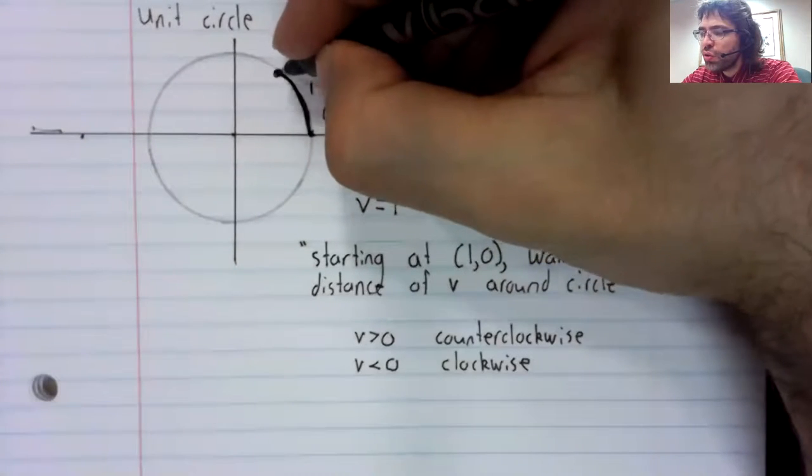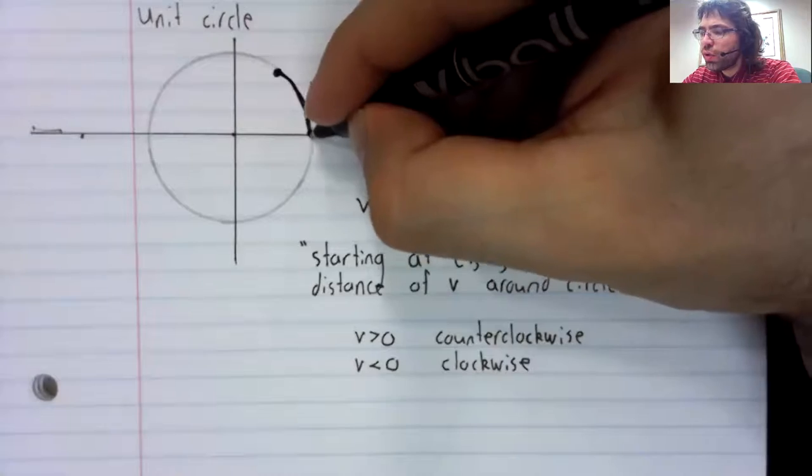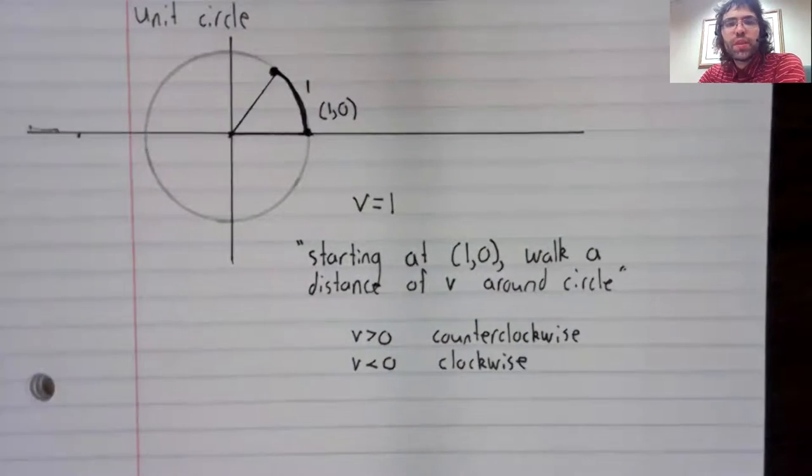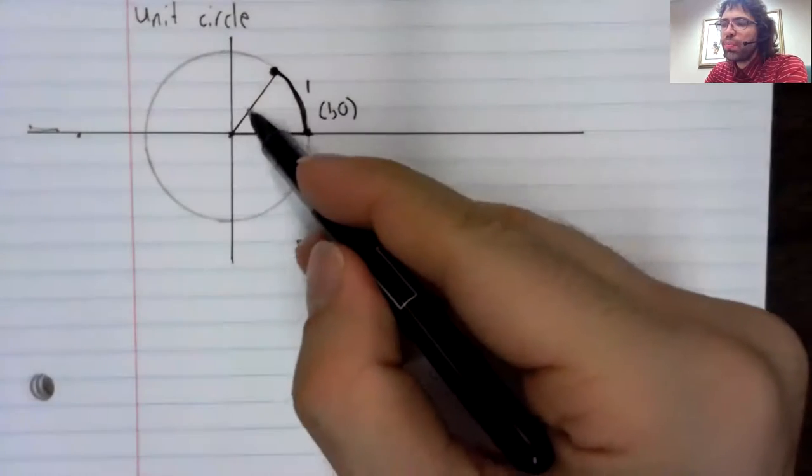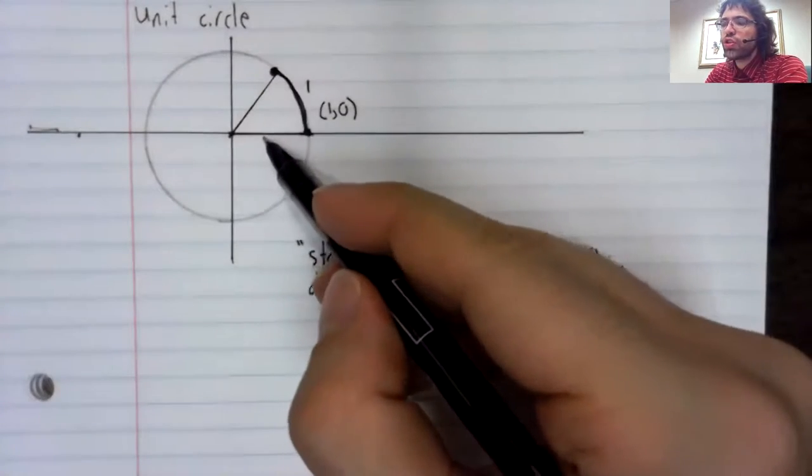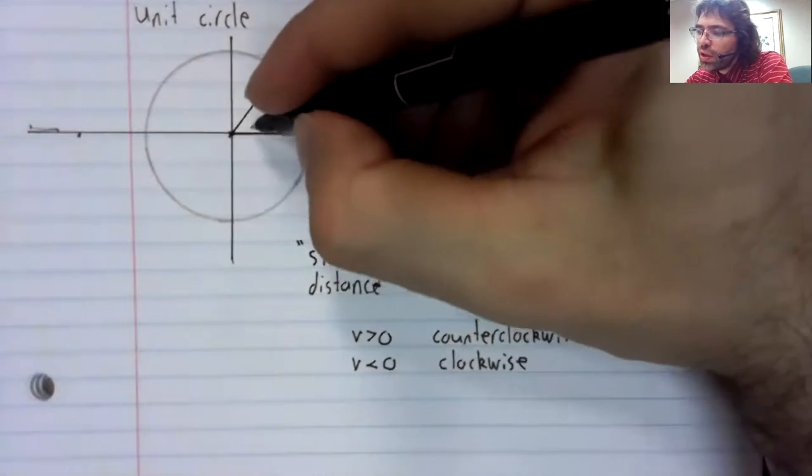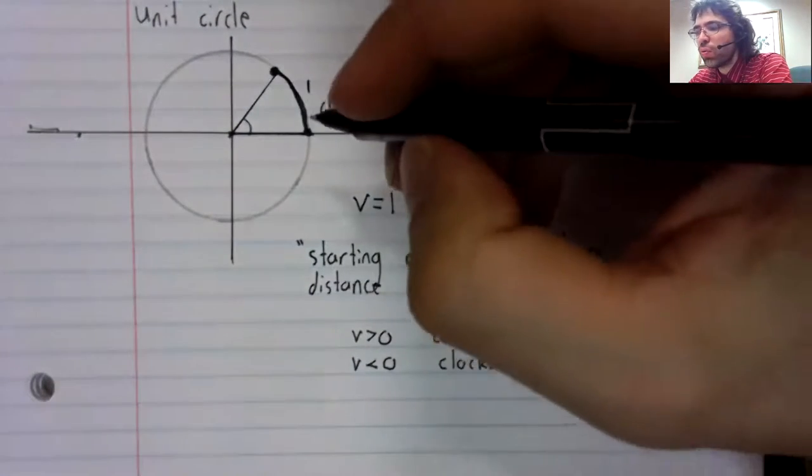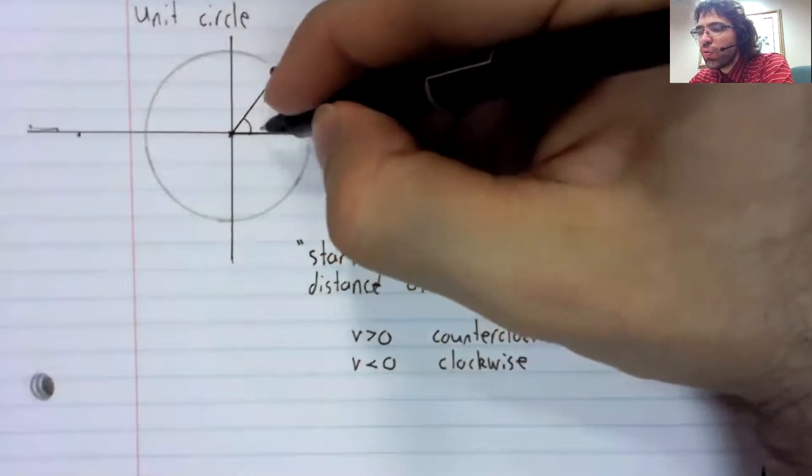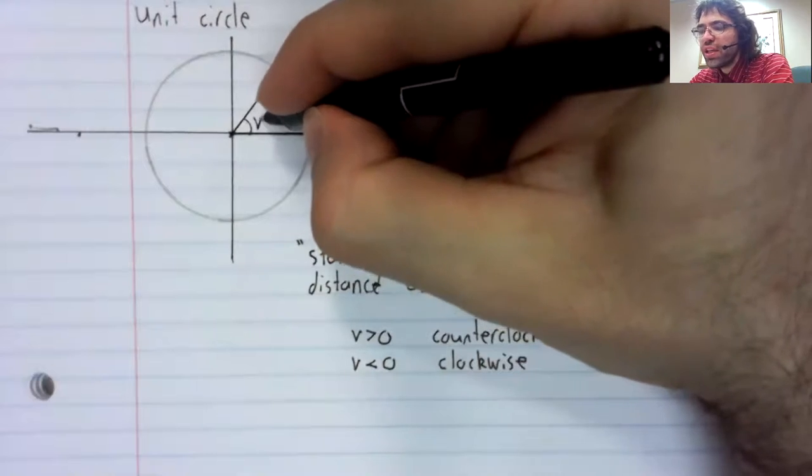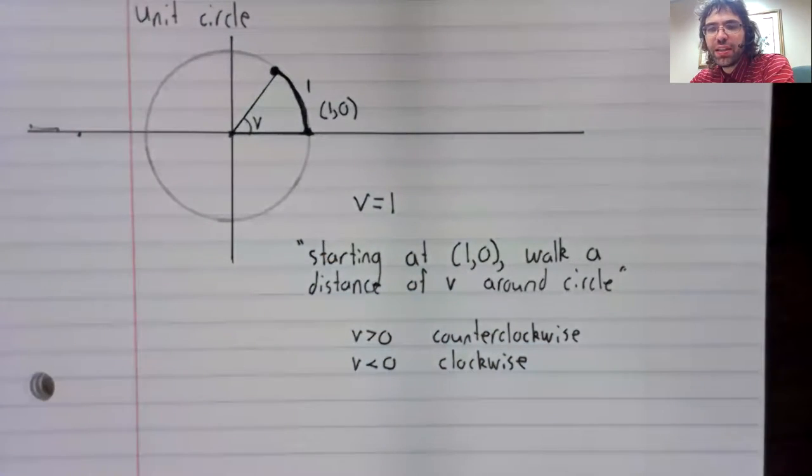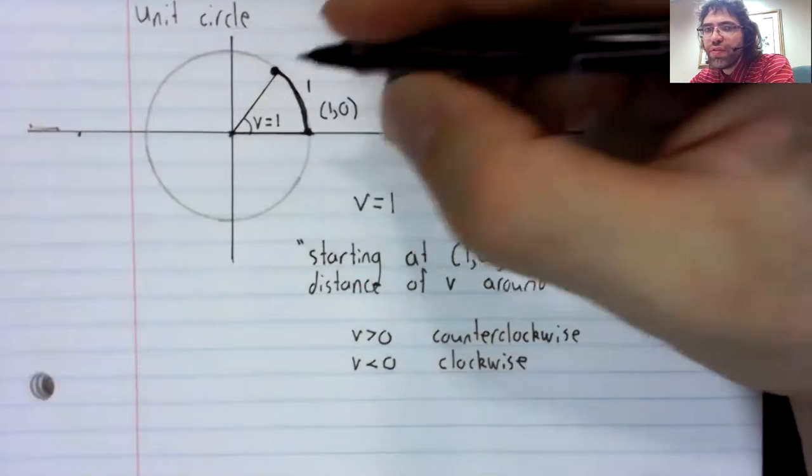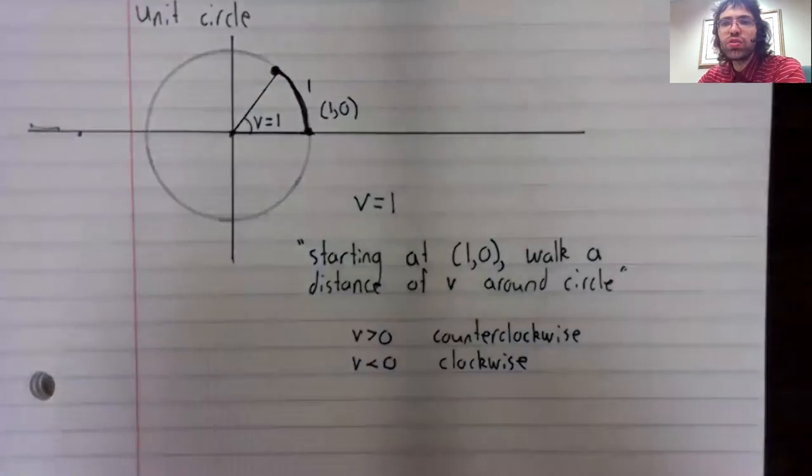If you look at your starting point and your ending point, and you connect them both to the origin, you create an angle. That angle is V radians. In this case, V equals one.